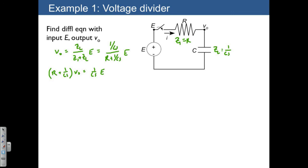To turn this into a differential equation, let's multiply both sides by CS. Then we have RCS plus 1 times VO equals E, or this is just RC times VO dot plus VO equals E. We've seen this differential equation before, except this time we derived it using the voltage divider.